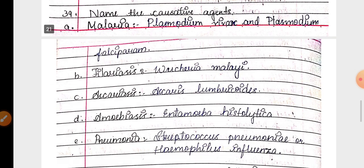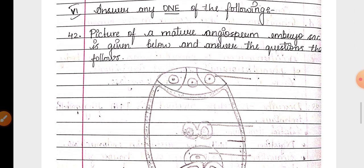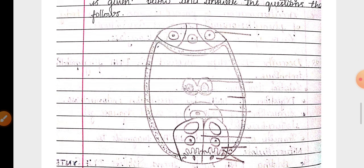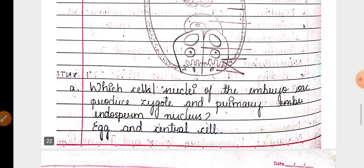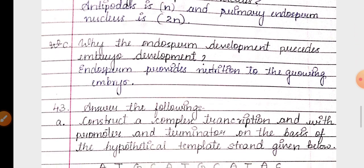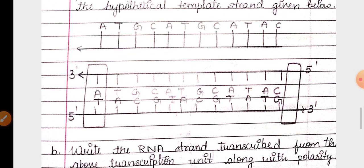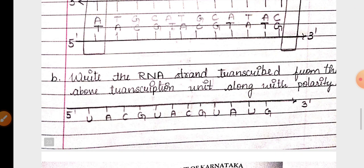Then 39th question, diseases have been given. You have to write the causative agent. Then 42th question, embryo sac diagram has been given. Related to that they have asked the questions. Then one template strand is given, for that you have to construct the transcription unit and also you have to write the mRNA transcribed from that.